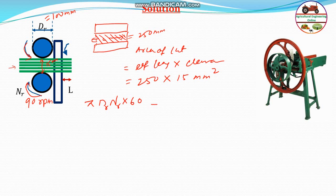Therefore, the speed per hour will be equal to π × d is 0.1 or 100 millimeter into n is 90 into 60, that will be equal to 1696.5 meter per hour. And this one you can directly calculate.